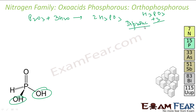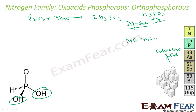It is a colorless solid with a melting point of almost 346 K. It is again a strong reducing agent.